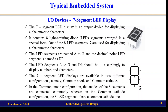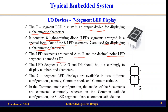The next I/O device is the seven-segment LED display, which consists of eight LEDs combined together to display alphanumeric characters. It is also an output device. It consists of eight LED segments arranged in a special form. Seven of the eight LEDs are used for displaying alphanumeric characters, named A through G, and the eighth LED is the decimal point, represented as DP.